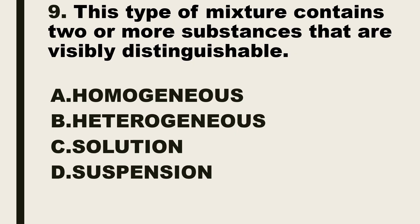Number 9. This type of mixture contains two or more substances that are visibly distinguishable. A. Homogeneous, B. Heterogeneous, C. Solution, D. Suspension.